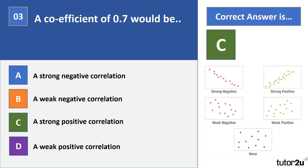Coefficients fall anywhere between minus 1 and 1. The closer they are to the value of 1, the stronger the correlation. A coefficient of minus 0.9 is a very strong negative correlation, and 0.9 is a very strong positive correlation. Around the 0 figure indicates there isn't a relationship between those variables.